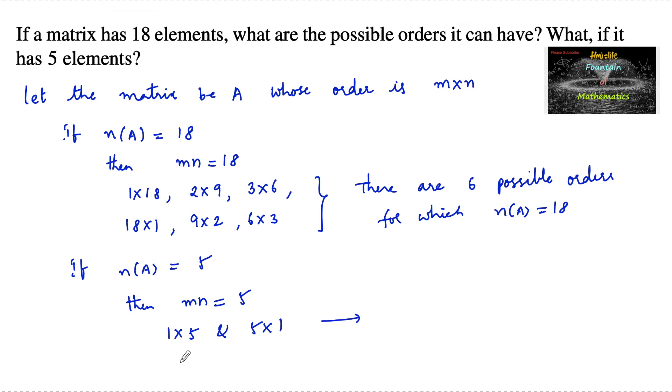That is 1 row 5 columns and 5 rows and 1 column. So we can see there are only two possibilities, two possible orders for which n(A) is equal to 5.